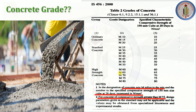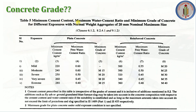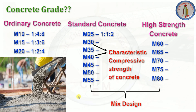Similar to Table 2, Table 5 of IS 456:2000 gives minimum cement content, water-cement ratio, and minimum grade of concrete based on environmental exposure conditions: mild, moderate, severe, very severe, and extreme. For moderate exposure, a minimum of M25 is required — M20 cannot be used. For very severe exposure, a minimum of M35 must be used.